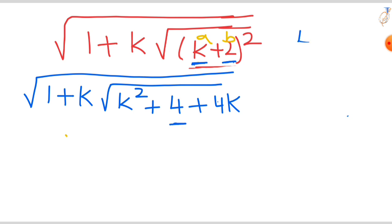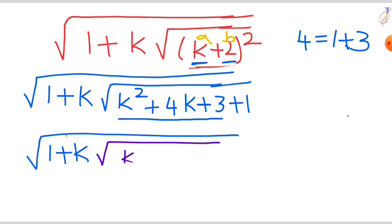This 4 we can write as 1 plus 3, 3 plus 1. What are the factors of this quadratic form? That is k plus 1, k plus 3. These are the factors of this quadratic. And this plus 1 you write to the front side.